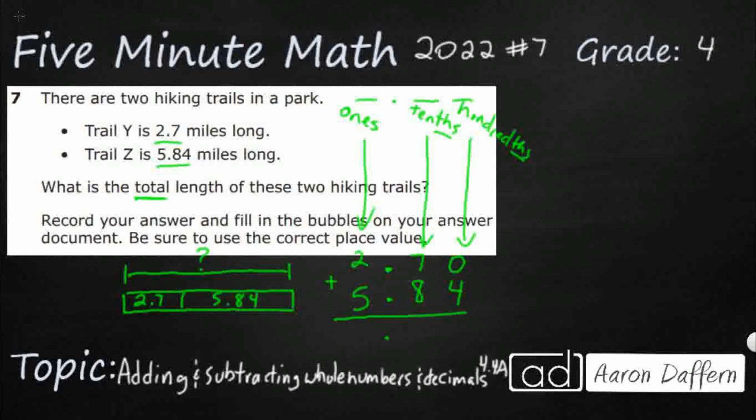So we're going to add these up. The rest is just like normal addition. Just make sure you bring that decimal down into your answer bar. So that's going to be 4. That's going to be 15. We're going to carry the 1. That's 3. That's 8. So 8.54 or 8 and 54 hundredths.